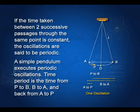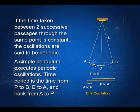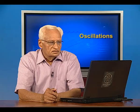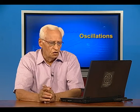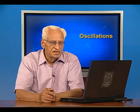The time period of a pendulum: starting from point P, going P to O, O to B, B back to A, and then to P constitutes one oscillation. The time taken for this oscillation is called the time period. The displacement from the mean position to an extreme position, say A or B, is said to be its amplitude. With little friction, the oscillations continue for a long time without any decrease in amplitude.